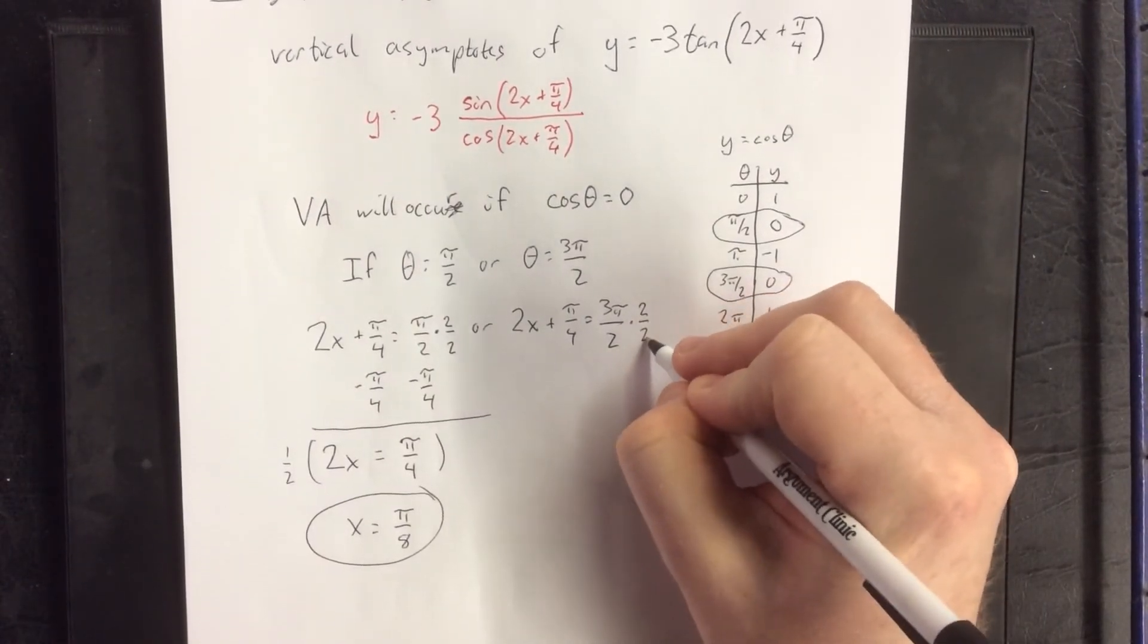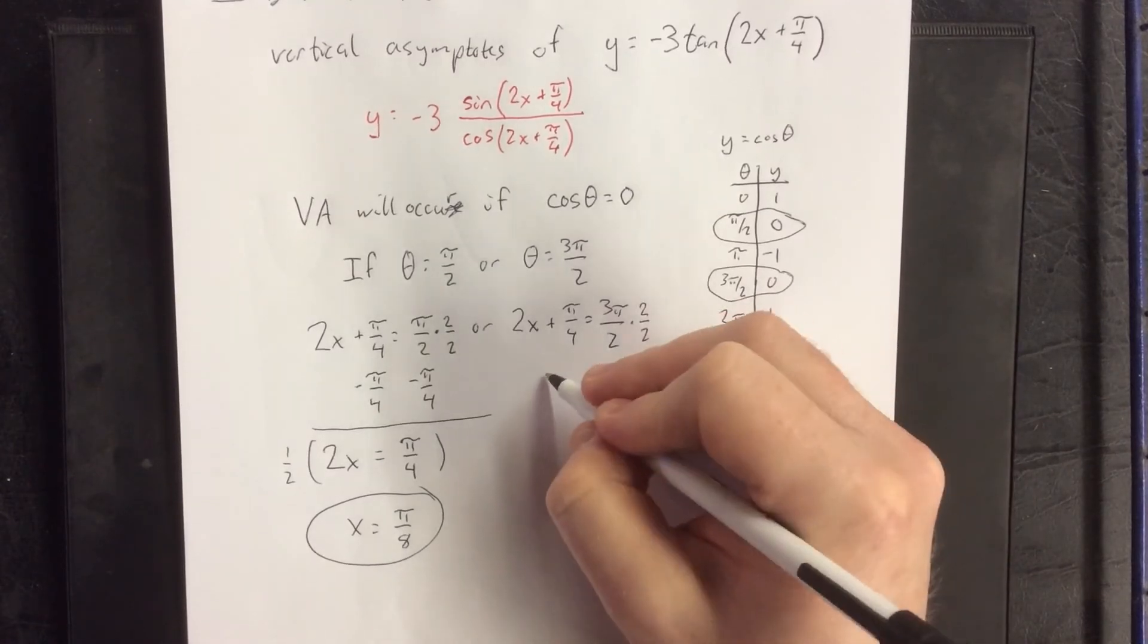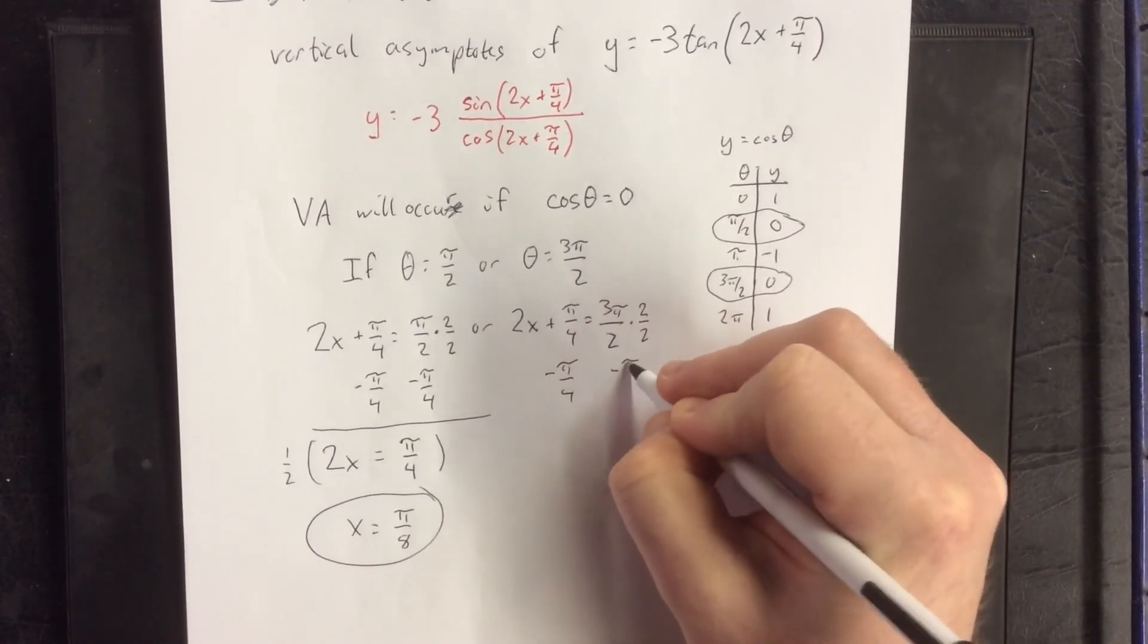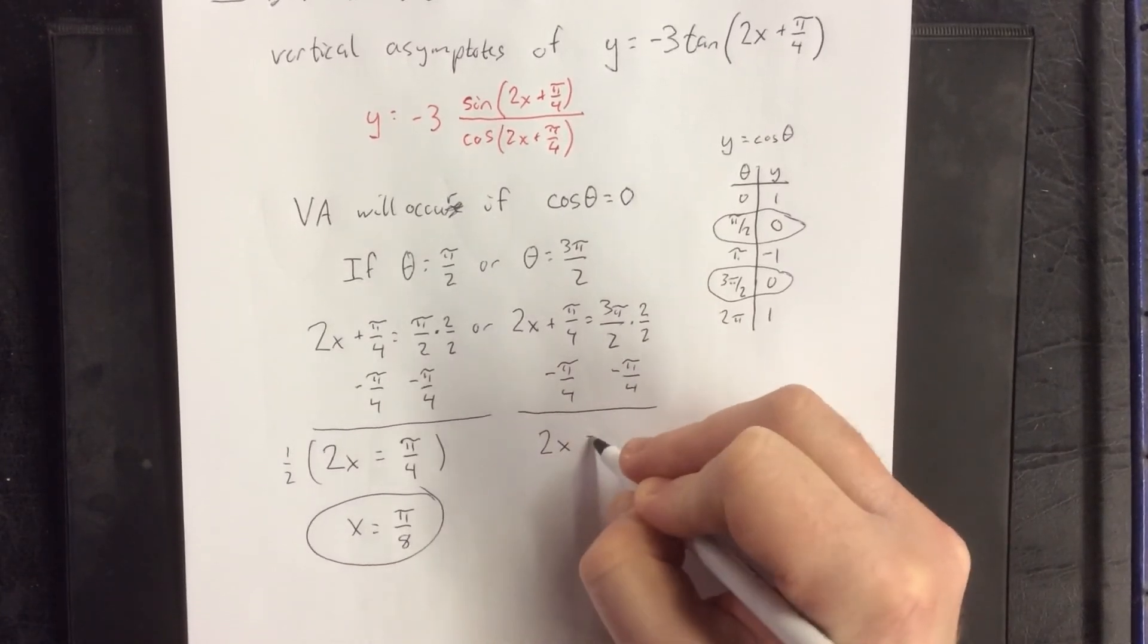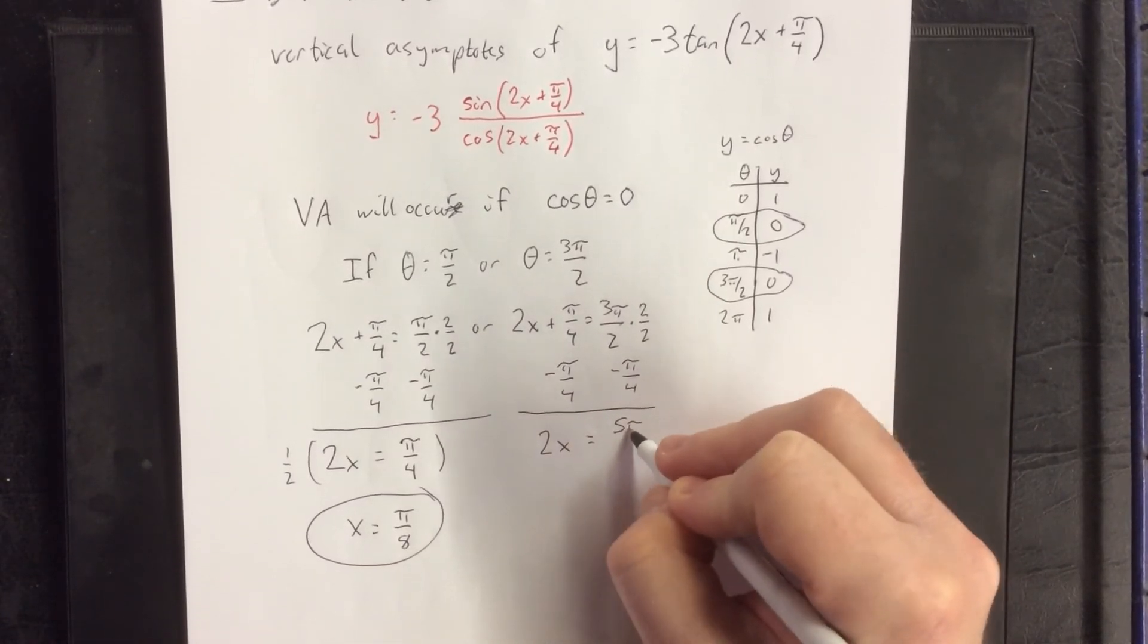Doing the same thing over here, we'll get a common denominator as 6 pi over 4, and subtract 1 pi over 4. 6 pi over 4 minus 1 pi over 4 will be 5 pi over 4.